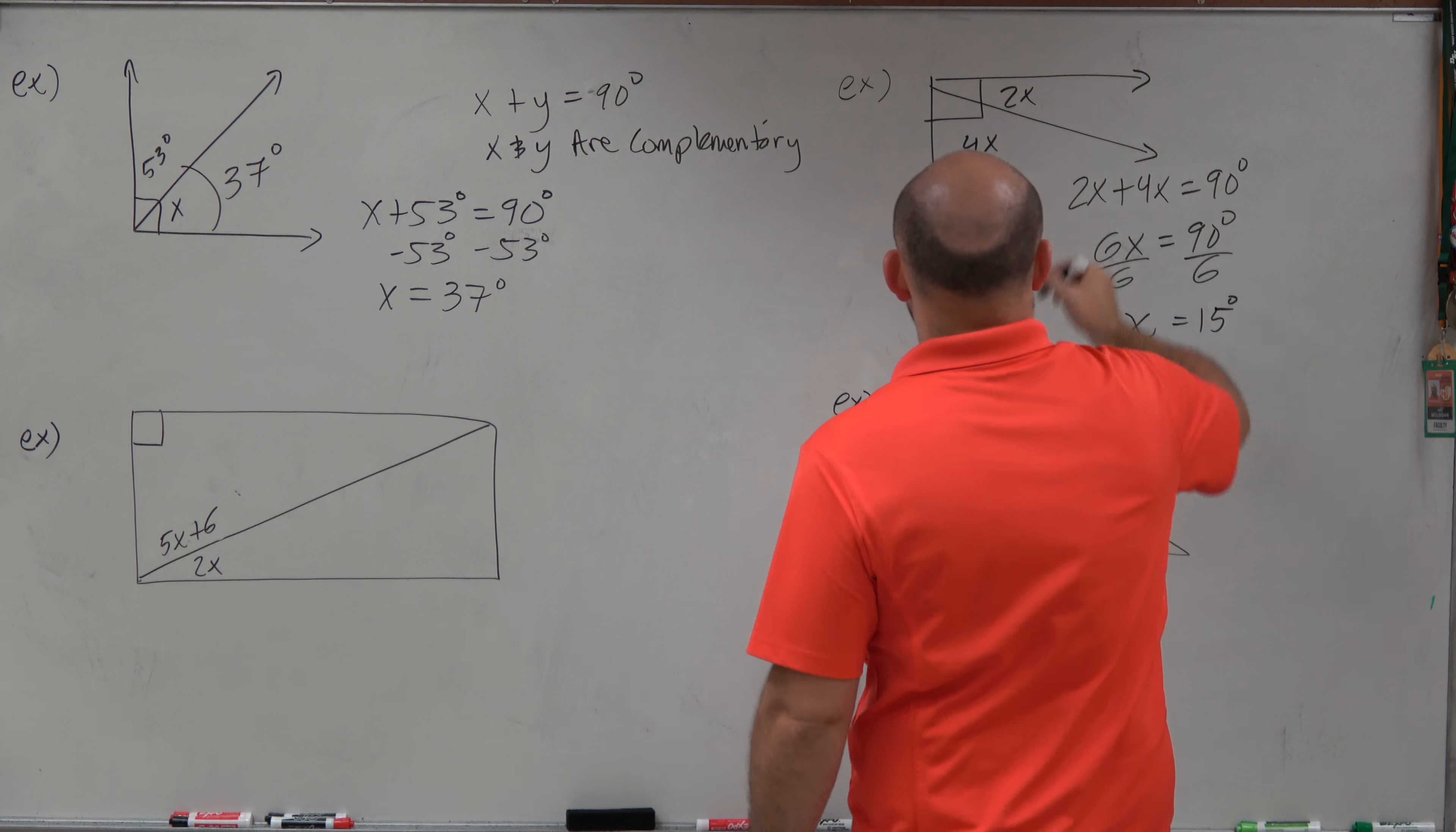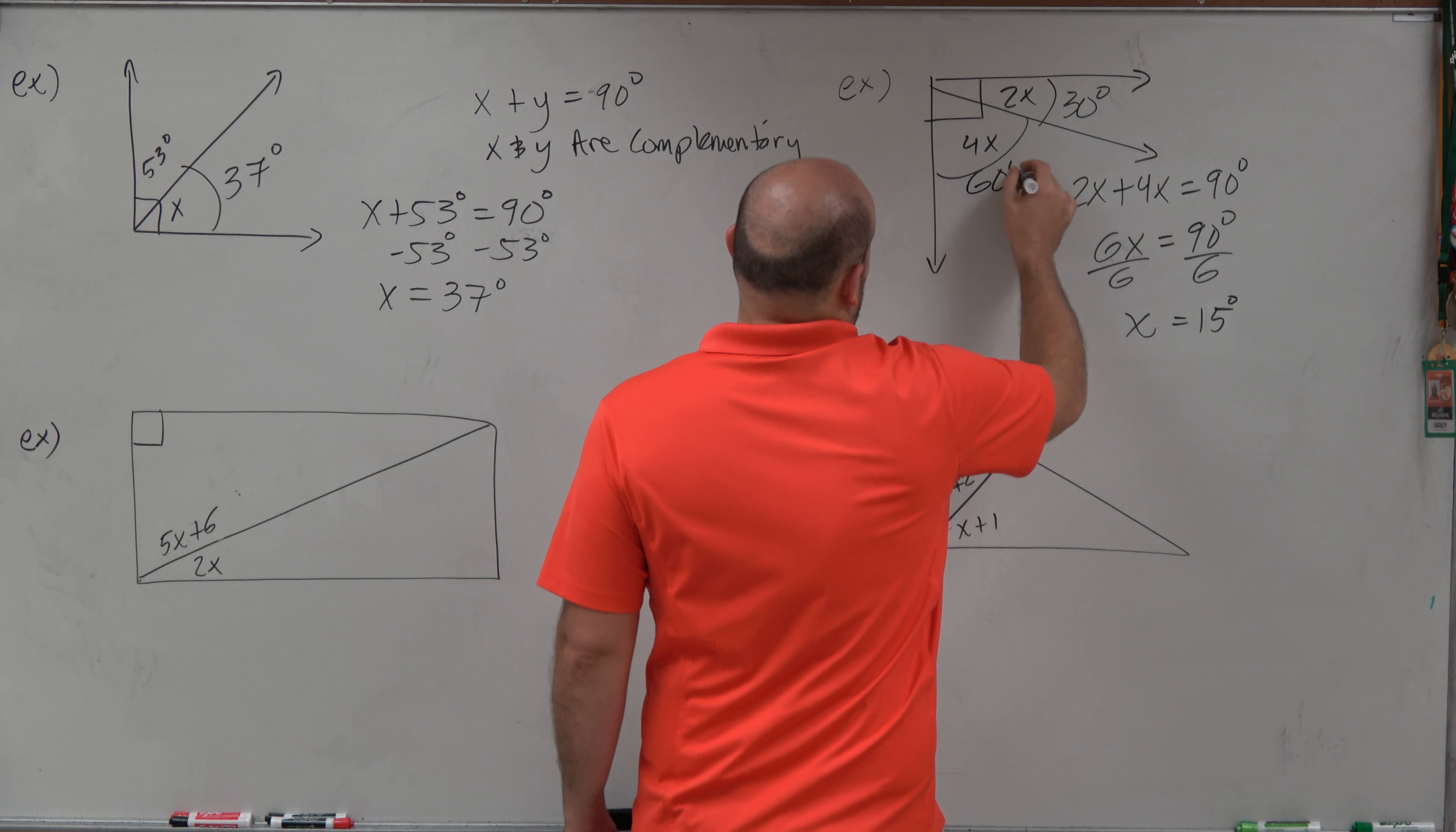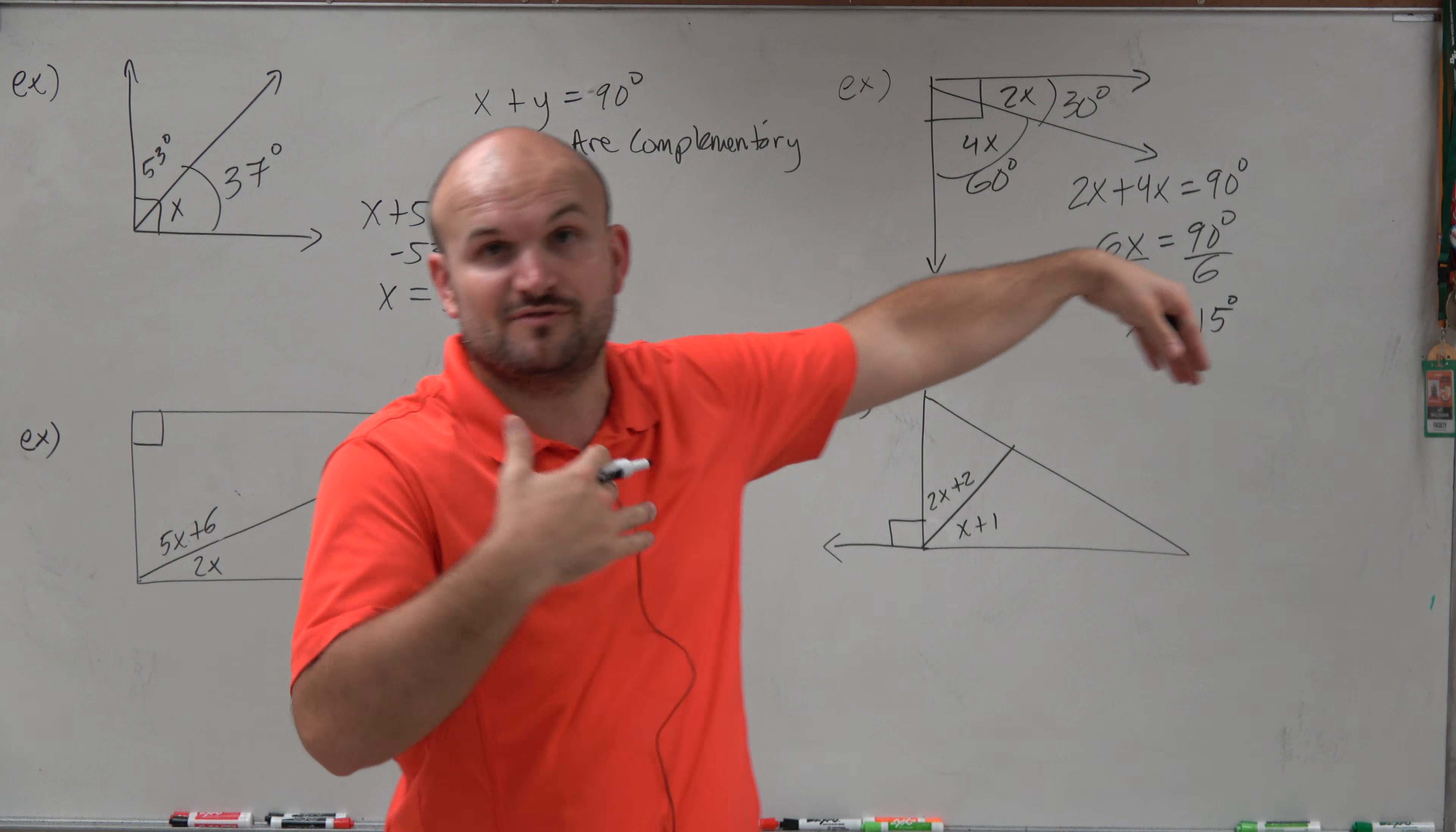So therefore, if x equals 15 degrees, that means that must be 30 degrees, and 15 degrees times 4 is going to be 60 degrees. And we can just double check here. Does 60 plus 30 add up to give us 90? Yes, it does. So therefore, we found x as well as the measure of each angle.